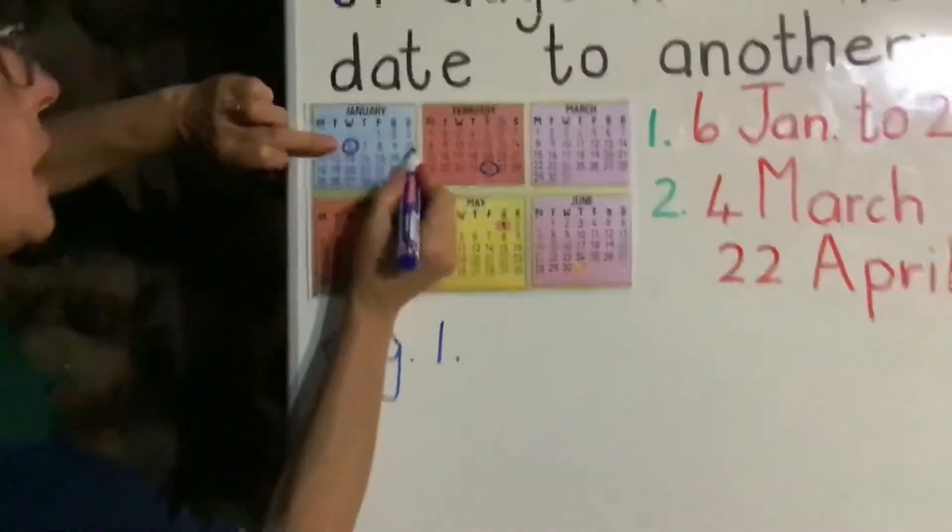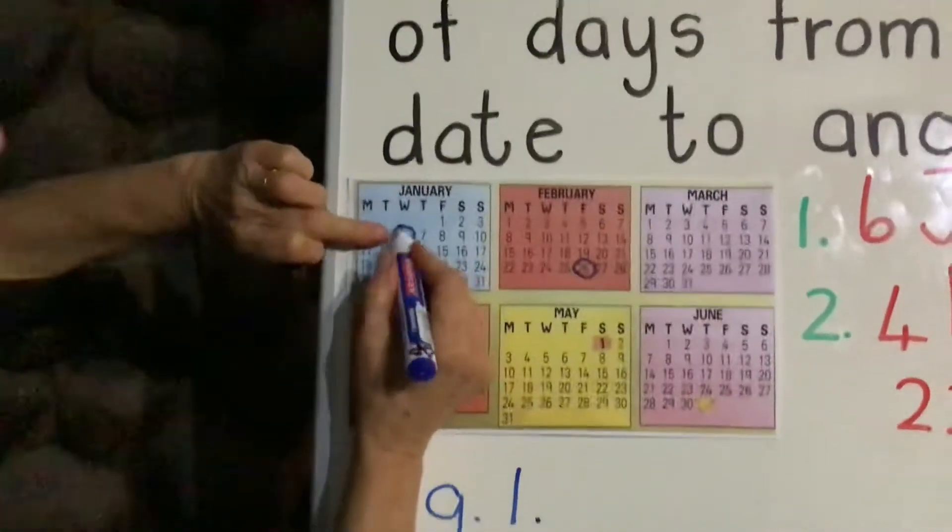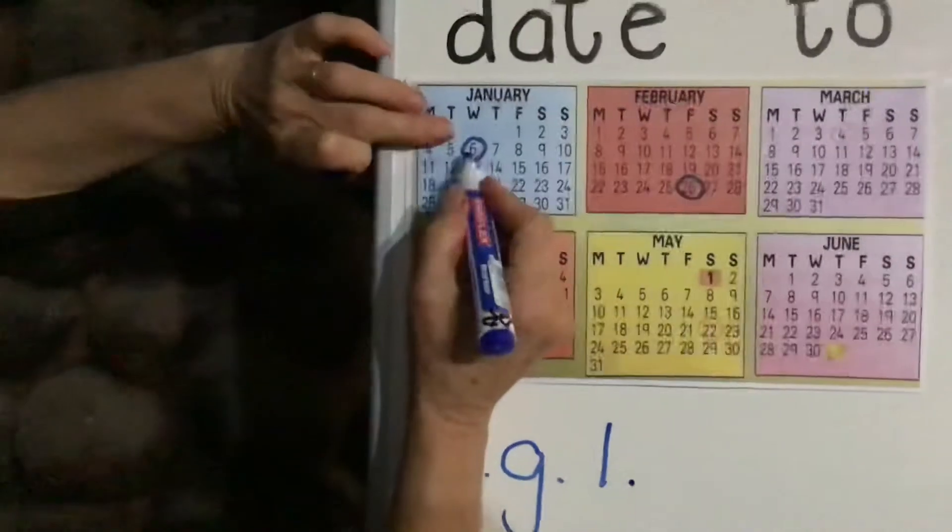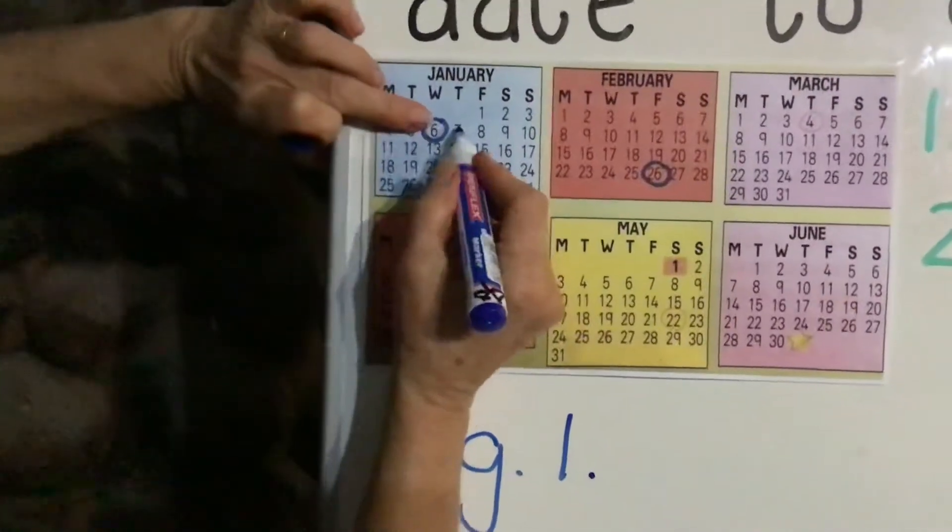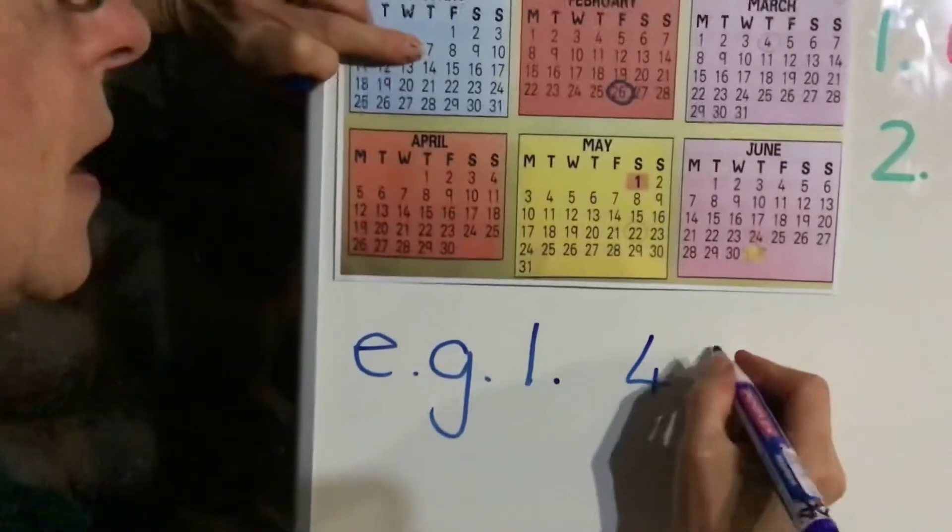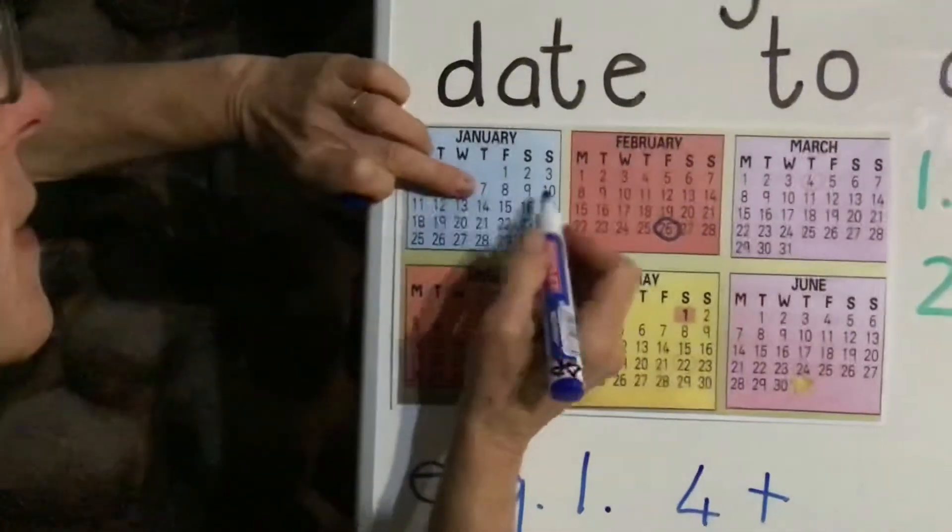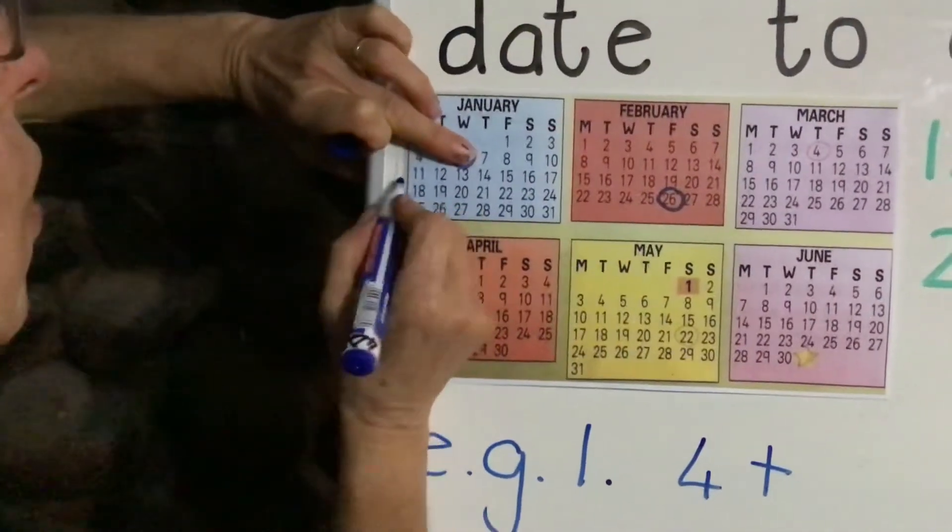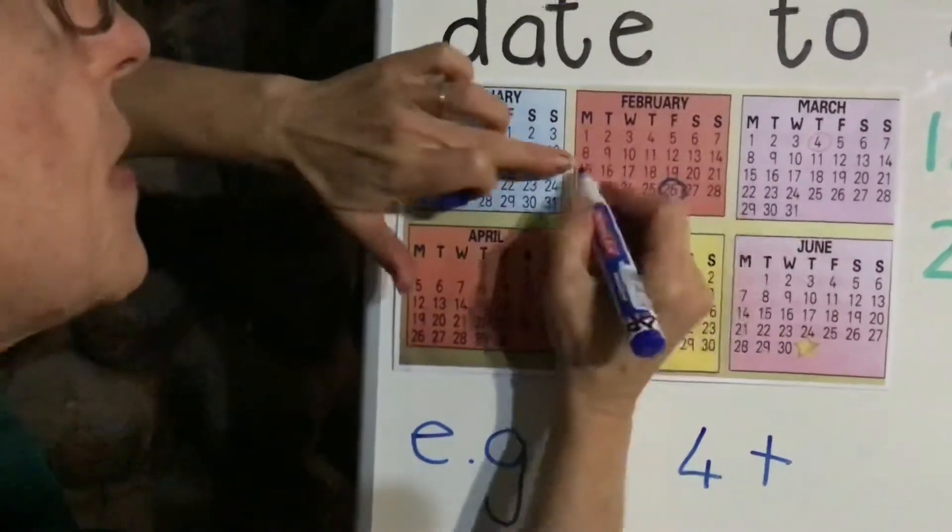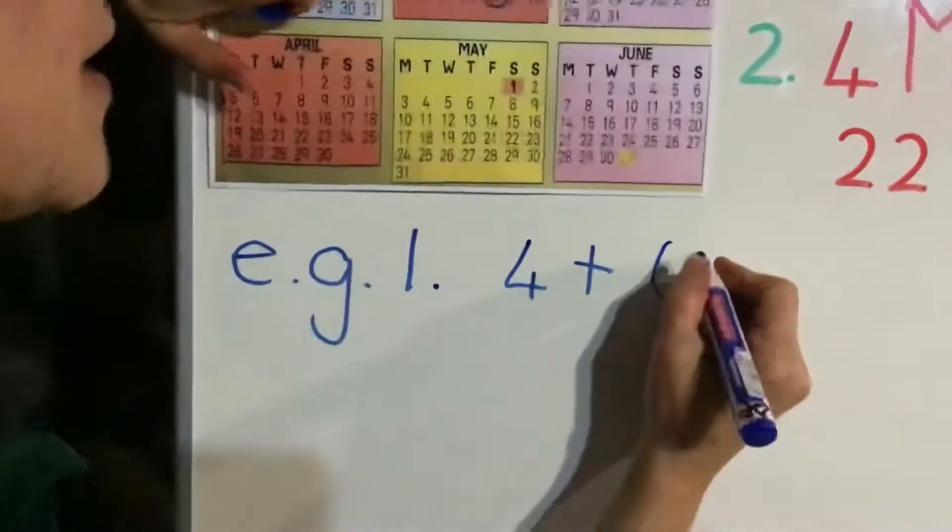Where we've circled the six, we do not count that circled date. The first date we don't count. So one, two, three, four days left over in that week. And then let's count how many full weeks there are: one, two, three, four, five, six full weeks.